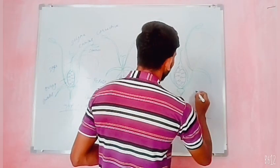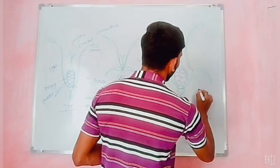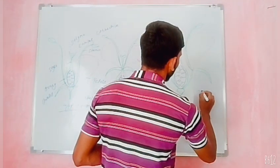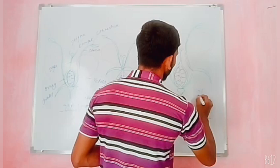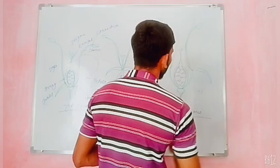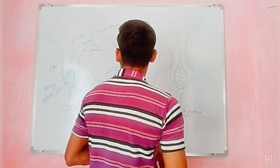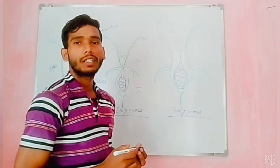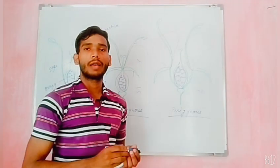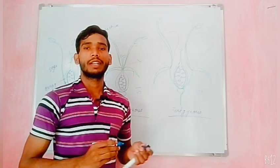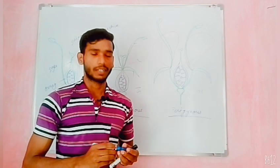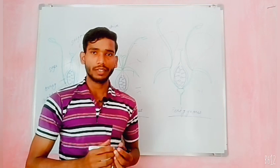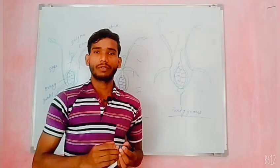In perigynous condition, the ovary becomes semi-inferior. So friends, these are the basic ideas about hypogynous, epigynous, and perigynous conditions of the flowers. Thanks for watching.